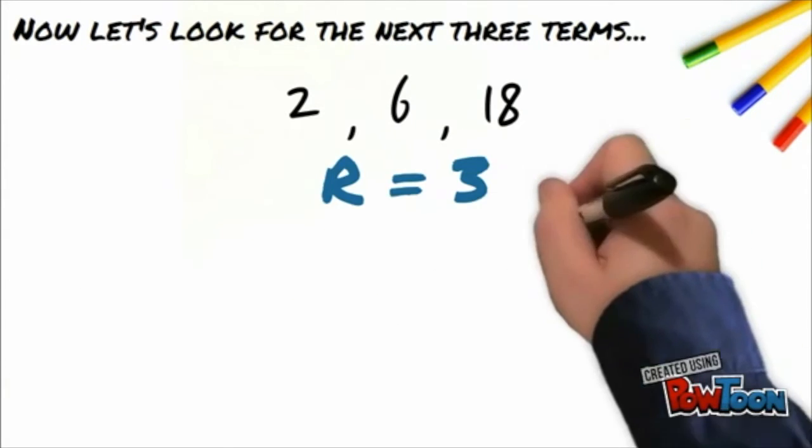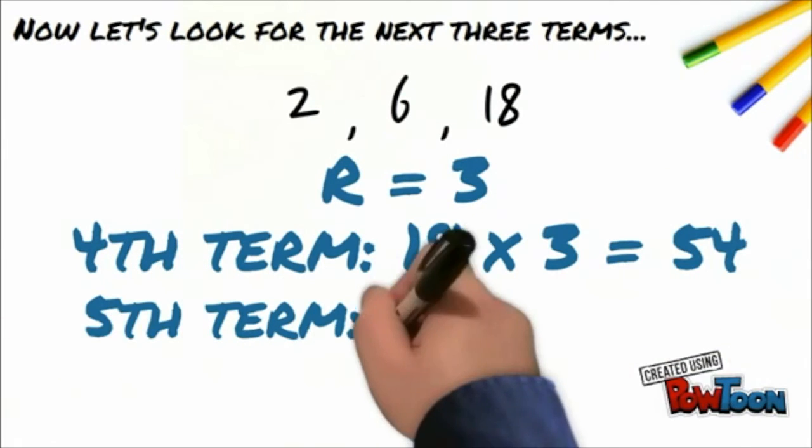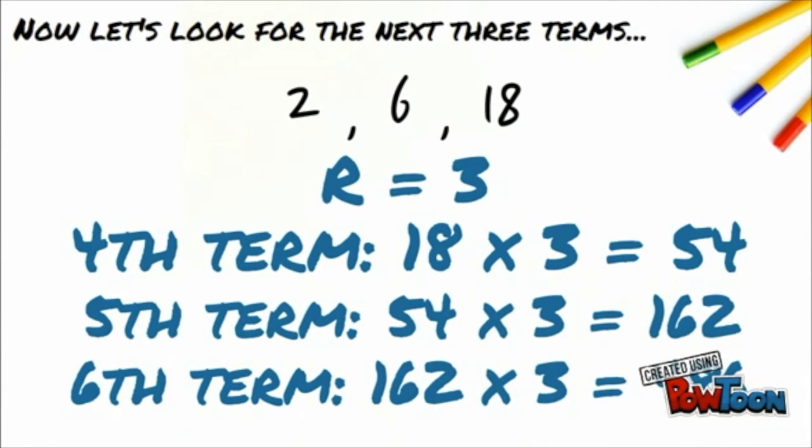Now, let's look for the next three terms. To get the fourth term, multiply the third term with the common ratio. The third term is 18 and the common ratio is 3. So, 18 times 3 is equal to 54. With this, let's try to compute for the fifth term and the sixth term. The fifth term will become 54 times 3 is equal to 162. And the sixth term will become 162 times 3 is equal to 486.